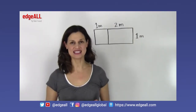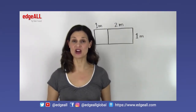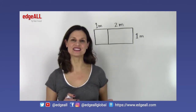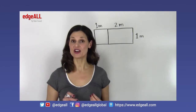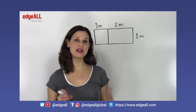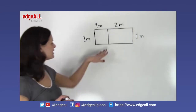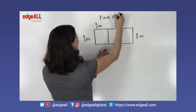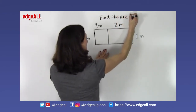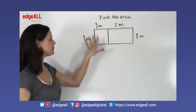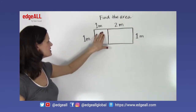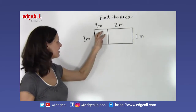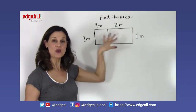Another important concept is that the areas of two rectangles or squares can be added together to find the area of a bigger shape. Let's look at an example where we need to find the area of a larger rectangle using information about a small square and a small rectangle inside it.